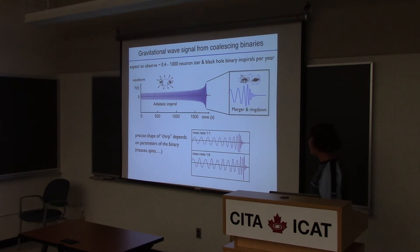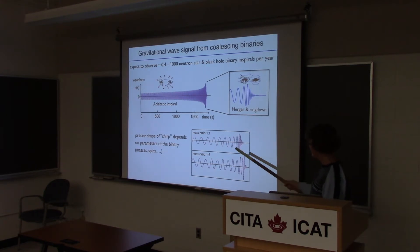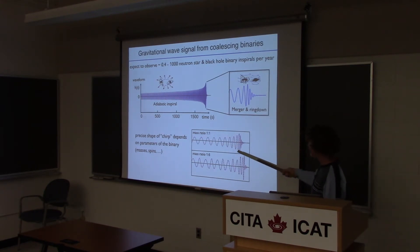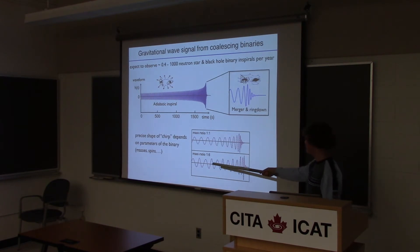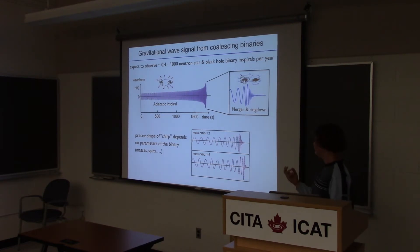The precise shape of these chirp oscillations tells you a lot about the parameters in the system. For equal masses, the chirp looks rather symmetric. For unequal masses, say mass ratio 1 to 6, it looks a bit asymmetric. And when there are spins, there could be some modulations from precession, for example.